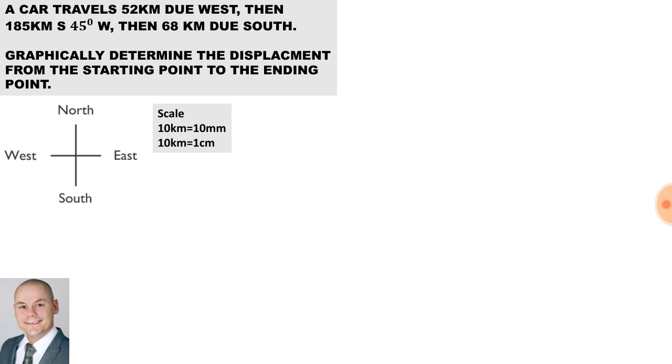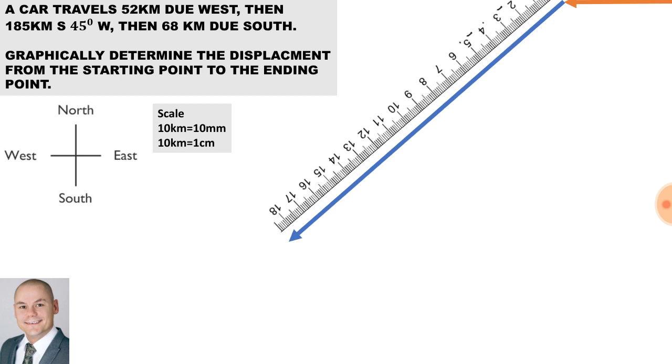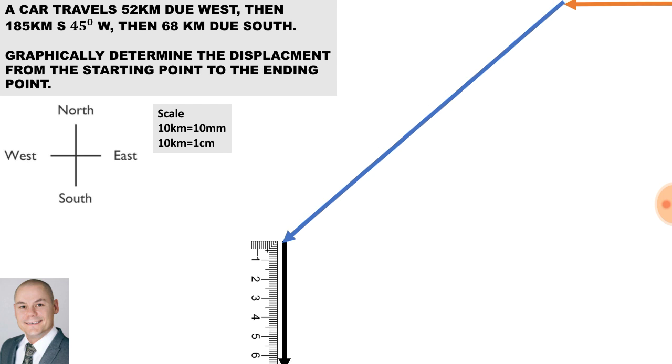We will use our compass headings to assist us. Using a scale of 10km equals 1cm, we draw 52km due west, then 185 kilometers or 18.5 centimeters southwest, then 68 kilometers due south which is 6.8 centimeters, and then we can find our resultant from the end point to the start point.